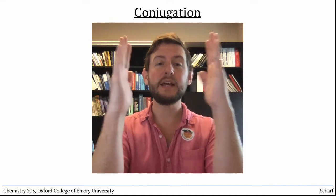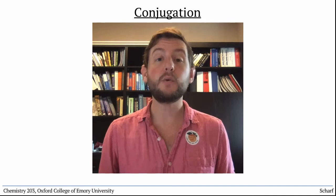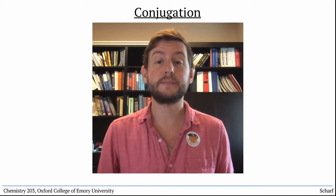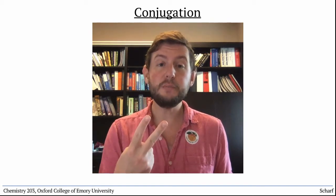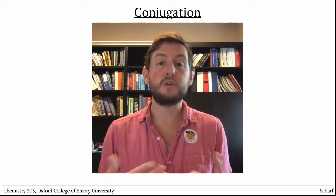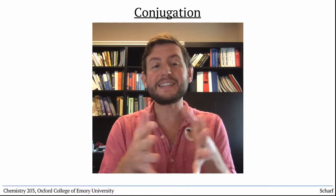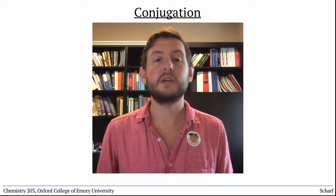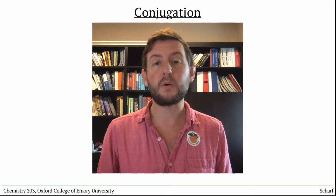Conjugation is the parallel overlap of three or more adjacent p-orbitals. If we have two p-orbitals aligned, we call it pi-bonding. Conjugation refers to extended, delocalized pi-systems spread out over three or more atoms.